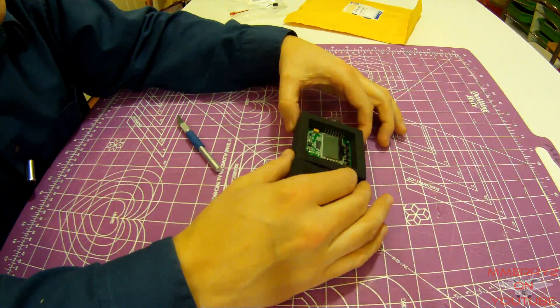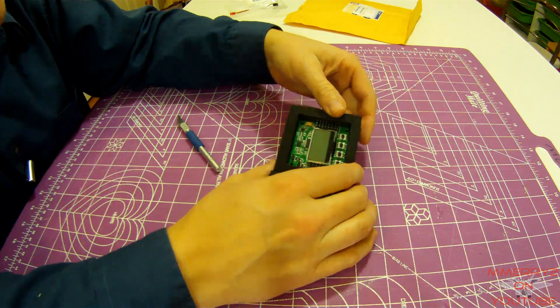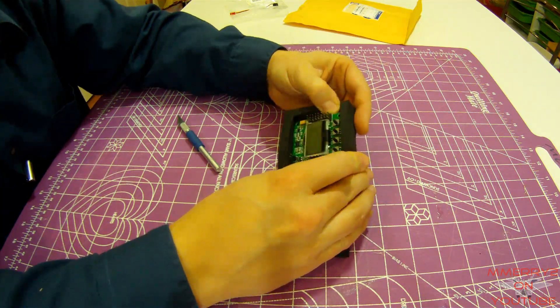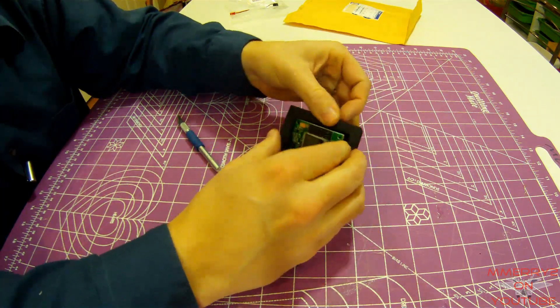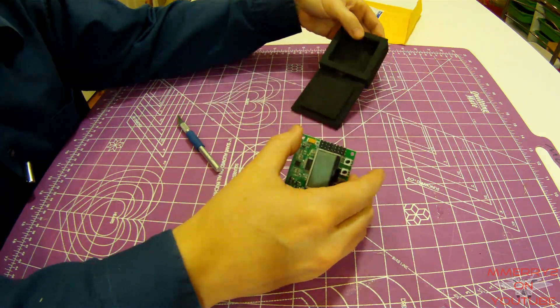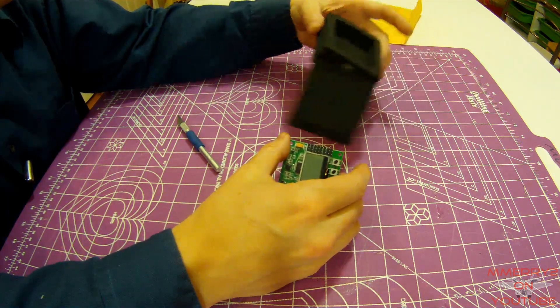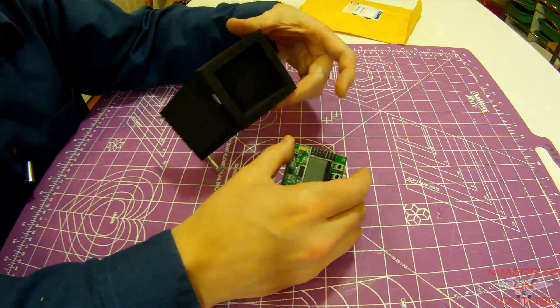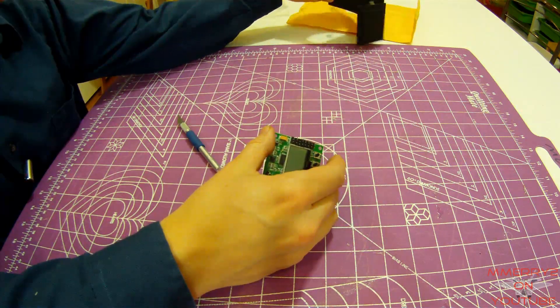Okay, we got the KK 2.1 right here. This is the board. Let's get it out here and I do not see a light. So I didn't get one.